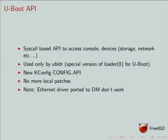The U-boot API is a syscall-based API. It was developed initially by Semihalf, who does a lot of FreeBSD embedded-related work. It gives us access to the console — so you can put strings on the serial — and to some devices, mostly storage and network. So UBLDR, using this standard syscall-based API, can enumerate SD cards, disk devices, sometimes USB. It can also enumerate network interfaces for PXE boot and similar.